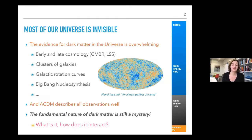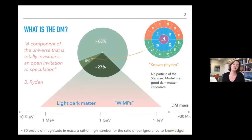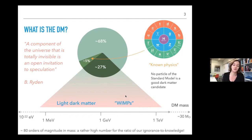We don't know what dark matter is, and we don't know how it interacts — part of it interacts via the gravitational force. As Barbara Ryden wrote in her cosmology textbook: 'A component of the universe that is totally invisible is an open invitation to speculation.' The mass range spans from wave-like dark matter at 10^-22 eV all the way to primordial black holes — roughly 80 orders of magnitude. This talk will mostly discuss traditional WIMPs between the GeV and TeV scale, and also light dark matter.